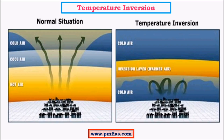In normal conditions we have warmer layers at the bottom followed by colder layers and even colder layers as we move upwards. In the temperature inversion situation, we have a colder layer, then a warmer layer, and again a colder layer — that is, a warmer layer being sandwiched between two colder layers.